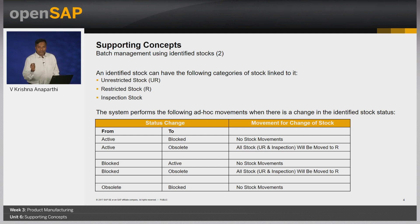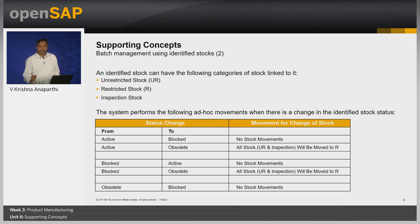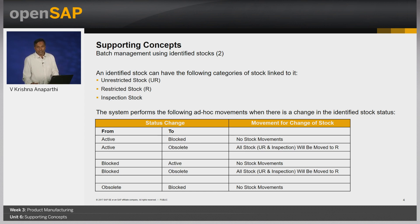Once I create an identified stock — in other words, once I have a batch — the batch may or may not have stock associated with it. Once stock is associated with the identified stock, it can be unrestricted, restricted, or inspection. At the same time, the batch itself can have different statuses. The batch can be active, blocked for some reasons, or it might become obsolete after expiring.